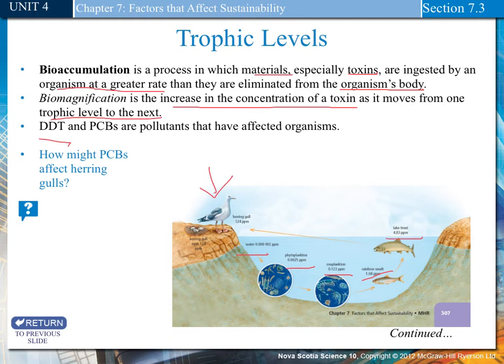The lake trout then eats rainbow smelt — more than just one — so the PCBs build up further. The herring gull eats the lake trout, and eats a lot more than just one. The eggs that the herring gull produces already have PCBs in them, so when these birds hatch and enter the cycle, they'll have even more. The problem is that these herring gull eggs may never hatch because PCBs usually affect the reproductive abilities of an organism, leading to a decrease in population. In the case of peregrine falcons, the population was on the brink of extinction.